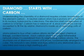Understanding the chemistry of a diamond requires a basic knowledge of the element carbon. A neutral carbon atom has six protons and six neutrons in its nucleus, balanced by six electrons. The electron shell configuration of carbon is 1s2, 2s2, 2p2. Carbon has a valence of four, since four electrons can be accepted to fill the 2p orbital.